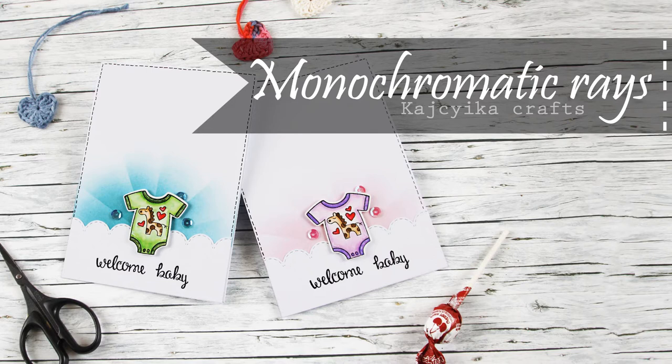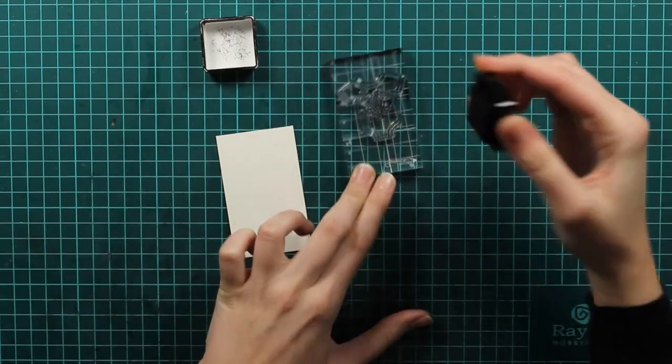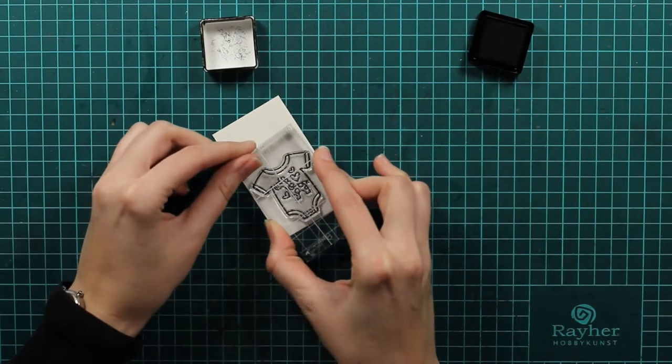We will start with these baby cards featuring monochromatic rays and the brand new set Lovable Laundry. I will be working on a girly version but I will walk you through and tell you how I did the boyish version too.